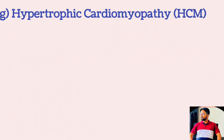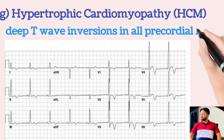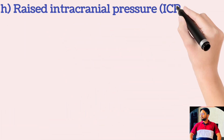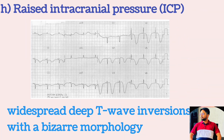Hypertrophic cardiomyopathy is associated with deep T-wave inversion in all precordial leads. Raised intracranial pressure: events causing a sudden rise in intracranial pressure produce widespread deep T-wave inversion with characteristic cerebral T-wave morphology.